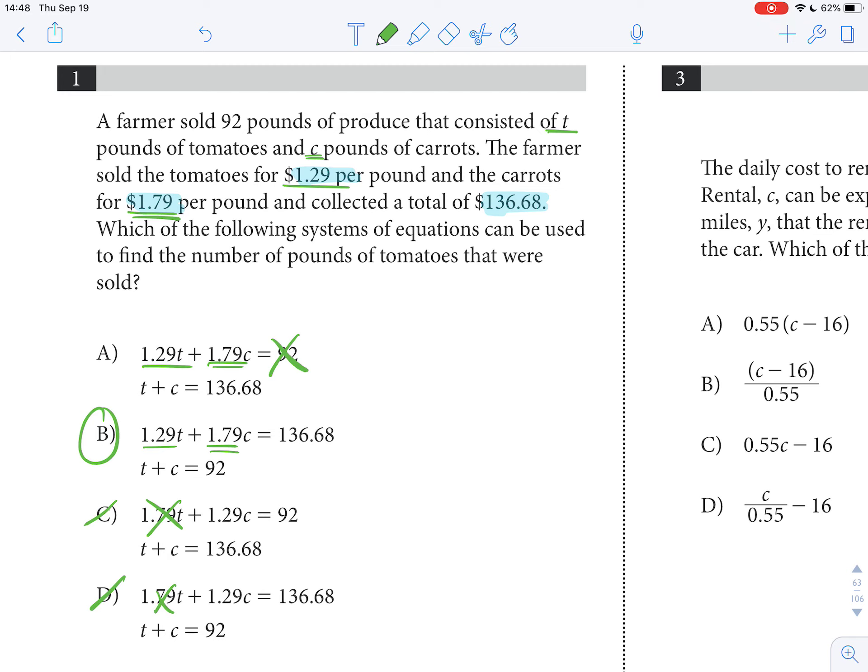This should make sense just by saying that 1.29 times the amount of tomatoes plus 1.79 times the amount of carrots equals $136, and then total tomatoes plus total carrots equals 92.